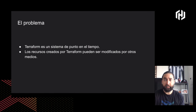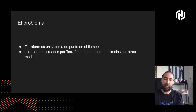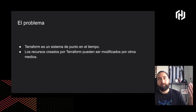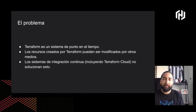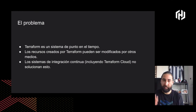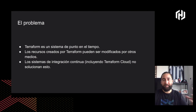Antes y después, los recursos creados por Terraform pueden ser modificados por otros medios: un pipeline en conflicto, algún otro controller que modificó, borró o recreó el recurso, o directamente alguien que lo pudo modificar a mano. Los sistemas de integración continua como Jenkins, Spinnaker o CircleCI, incluyendo Terraform Cloud, no solucionan esto porque siguen siendo sistemas de ejecución de punto en el tiempo. Yo hago mi commit o mi pull request y ahí se ejecuta Terraform, pero antes y después, nada garantiza la sincronía.